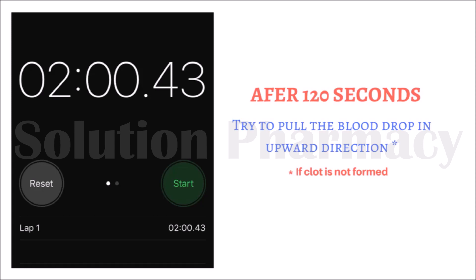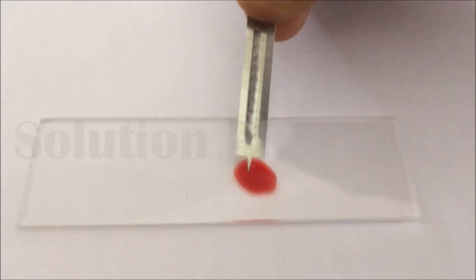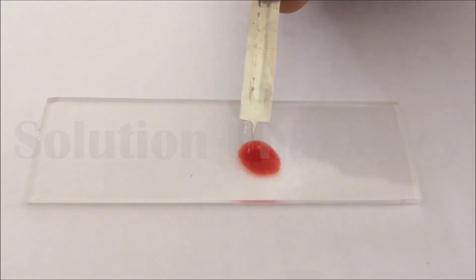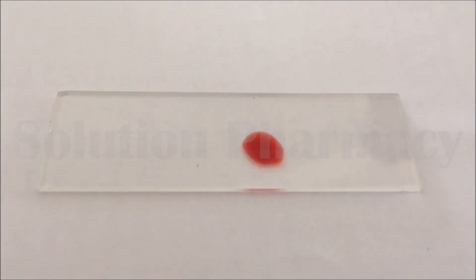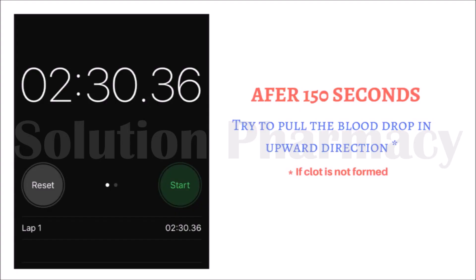If there is clot formation, you can observe formation of thread-like structure, that is the formation of fibrin thread. After 120 seconds, clot is not formed.